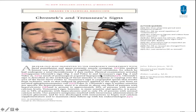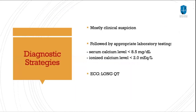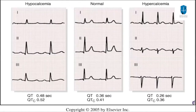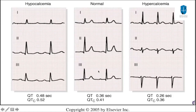This patient was corrected with the administration of calcium gluconate and was discharged home on oral supplementation with follow-up with his endocrine physician. The diagnostic strategy relies mostly on clinical suspicion followed by appropriate laboratory testing — serum calcium level and ionized calcium level. The ECG shows a prolonged QT. In hypocalcemia we see a prolonged QTc, and in hypercalcemia we see a short QT.